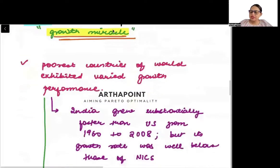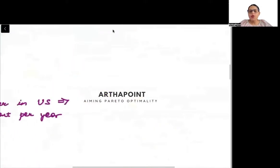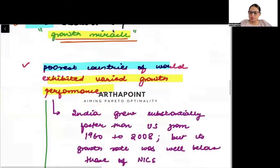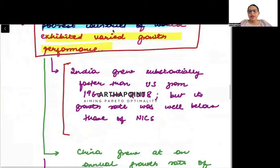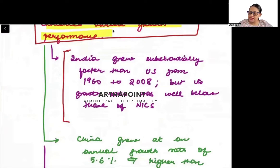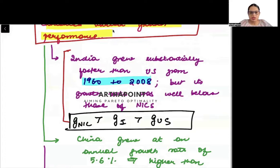It was also seen that poorest countries were showing varied growth rate performance. The poor countries were showcasing very different growth experiences. For example, if we talk about India, between 1960 to 2008, its growth rate in India was more than growth rate in US, but it was less than growth rate of newly industrialized countries.